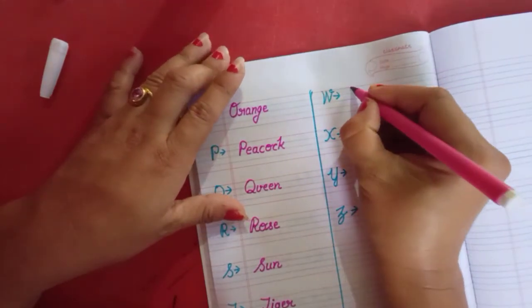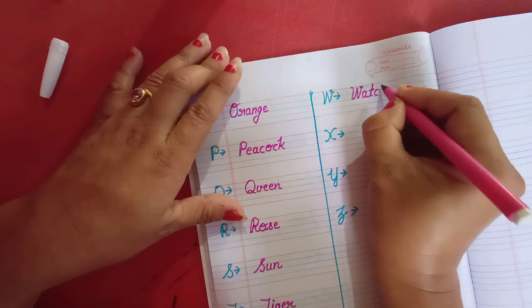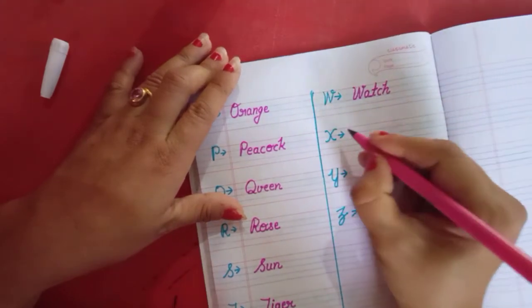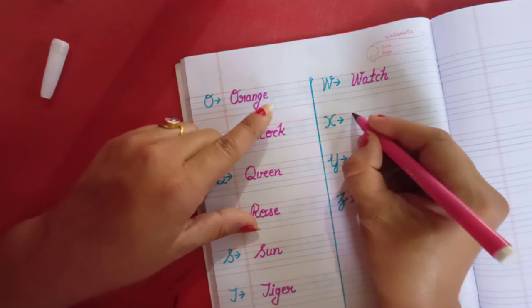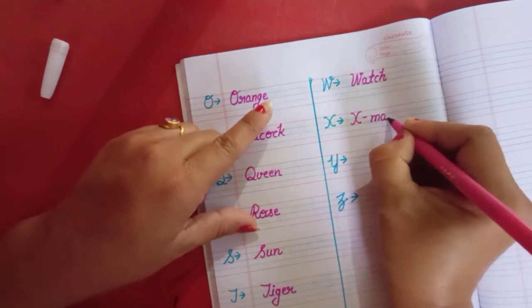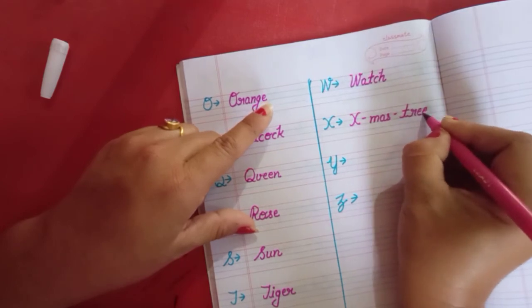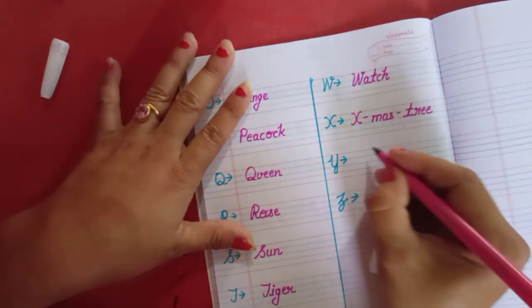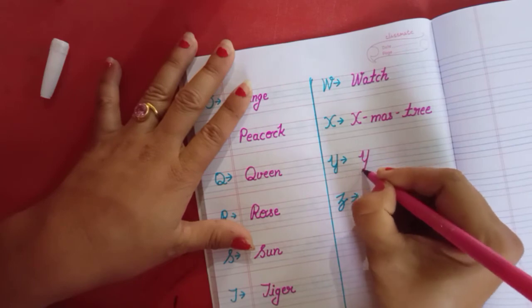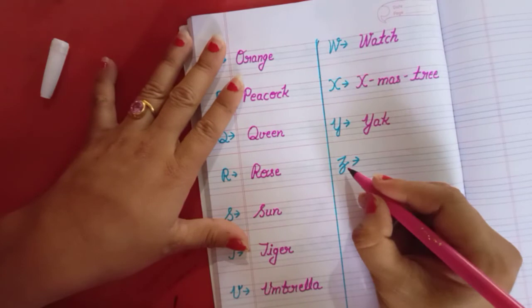Next one is W. W for watch. W A T C H watch. X for xylophone. X for Christmas tree. X M A S Christmas T R double E tree. Christmas tree.